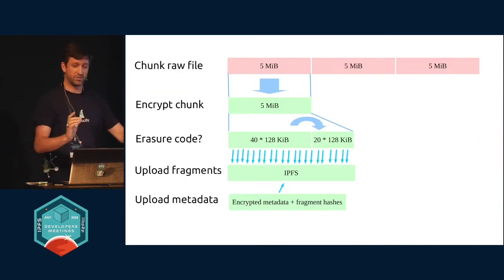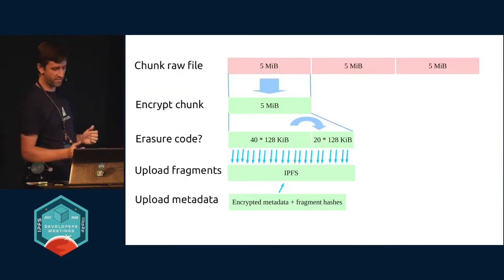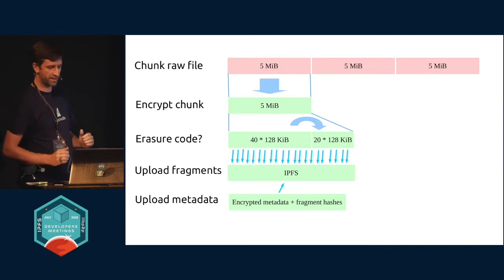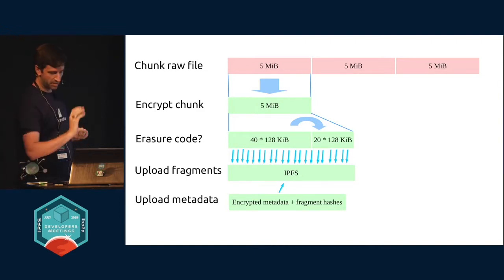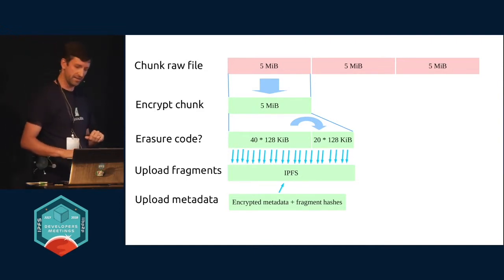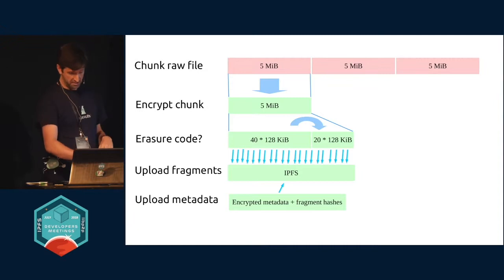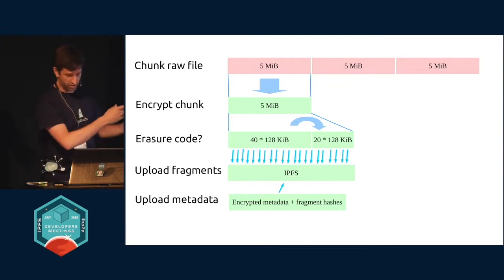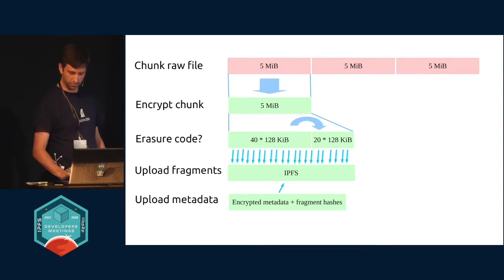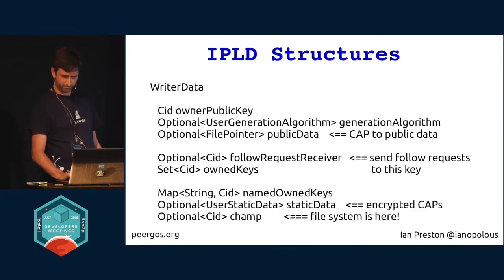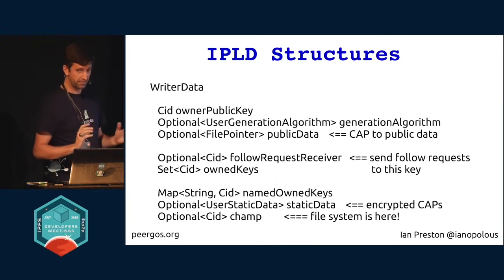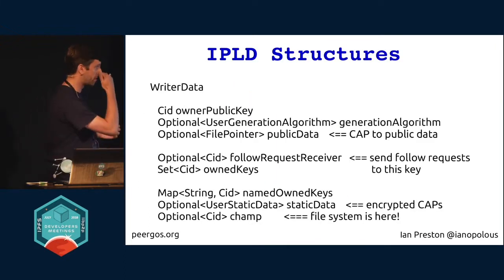This is what we do: we chunk files at 5 meg, encrypt, split into fragments, possibly with erasure coding, dump them in IPFS, and then create the Cryptree node which has Merkle links to each of those fragments. Everything we do is already in IPLD.